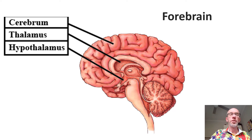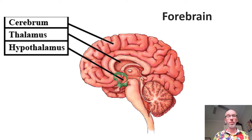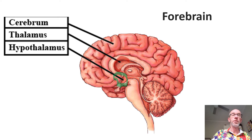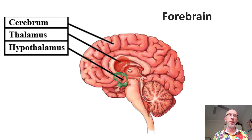Now the forebrain is where all the action occurs. We've got the hypothalamus here — a tiny little structure which basically plays a key role in regulating the endocrine system, the release of hormones from various glands. It plays a key role in our response to stress and our circadian rhythms. Then you've got the thalamus here, which basically acts like a relay station for the senses. The sensory systems detect, convert, and convey sensory input into neural impulses, which find their way to the thalamus, which then transfers it to the relevant part of the cortex.